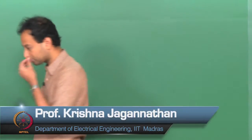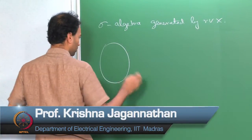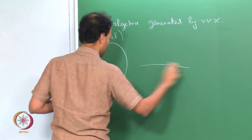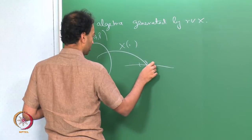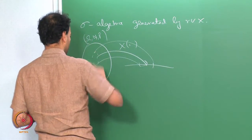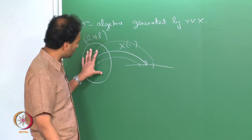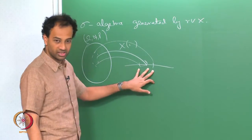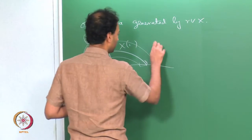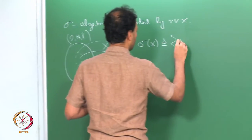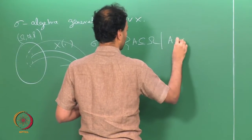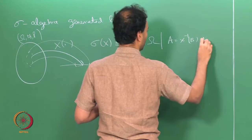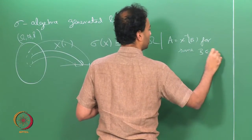We were discussing the sigma algebra generated by a random variable X. We define this sigma algebra as follows: we take this space (Ω, F, P), and for the random variable X, we take all the Borel sets and their pre-images under X. In particular, we defined this as the set of all subsets of Ω such that A equals X inverse of B for some Borel set B.